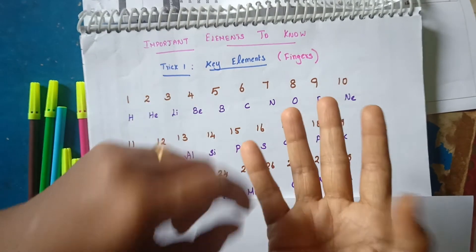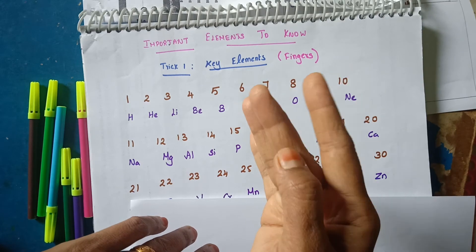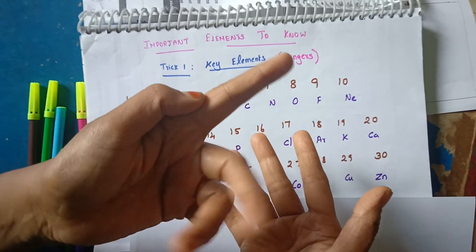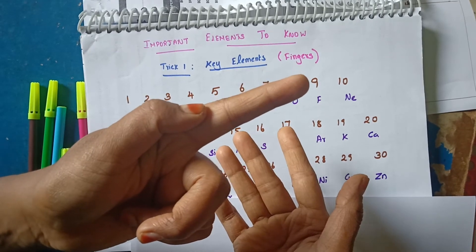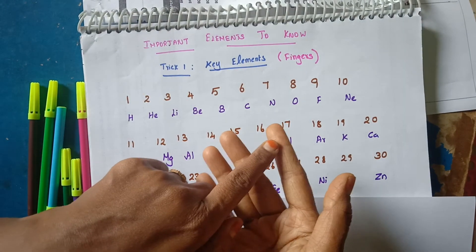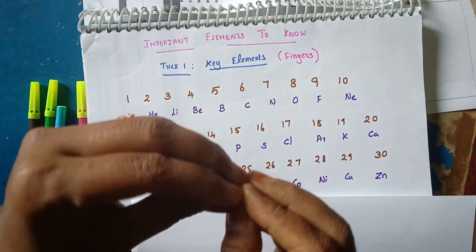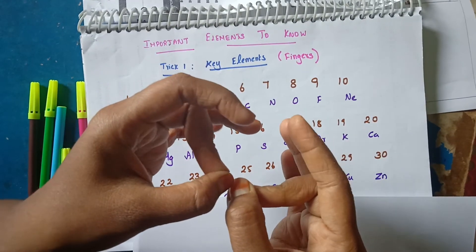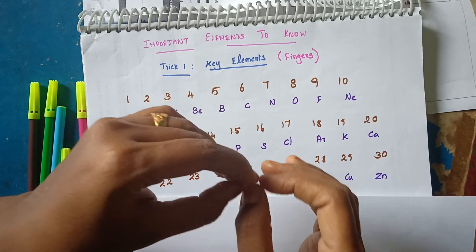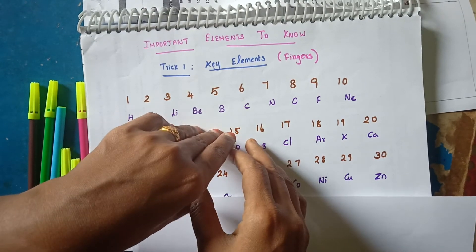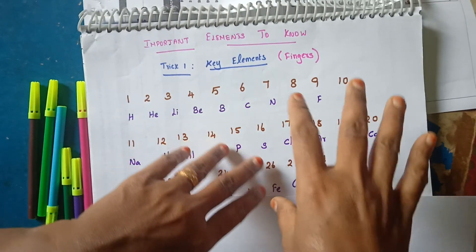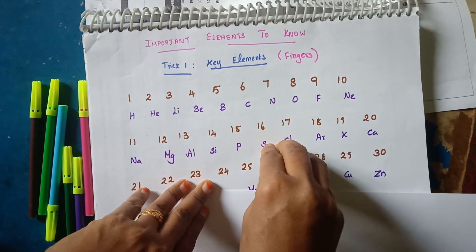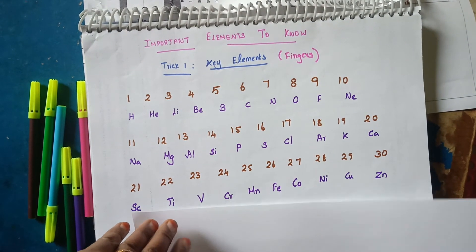Now from 21: Scandium, Titanium, Vanadium, Chromium, Manganese, Iron, Cobalt, Nickel, Copper — Copper's atomic number is 29. Use the finger trick to connect and remember everything. You like the trick — you can see the memory power!